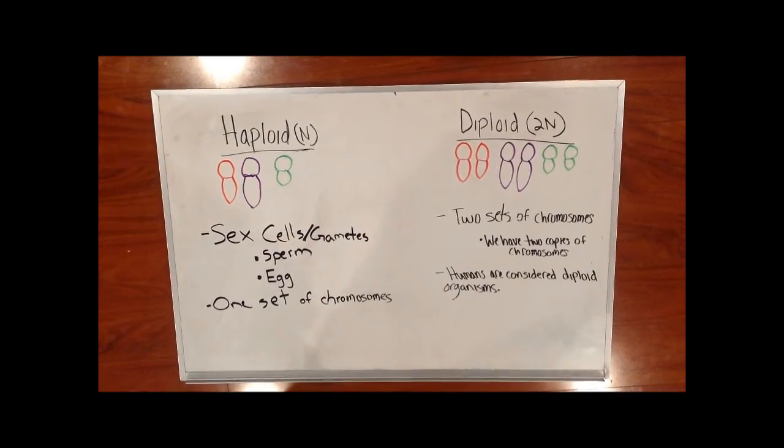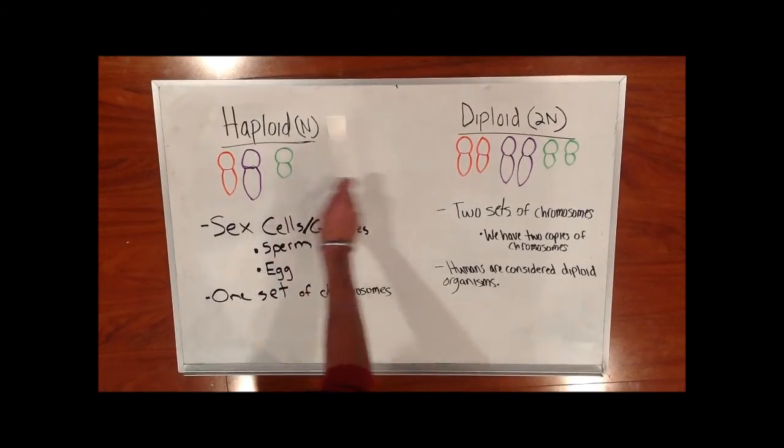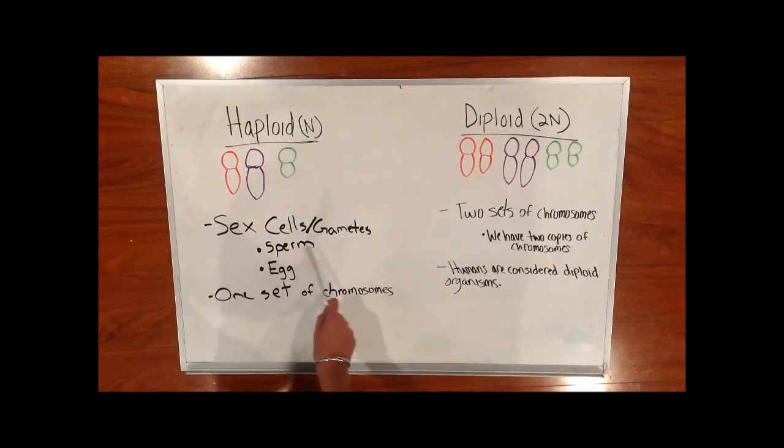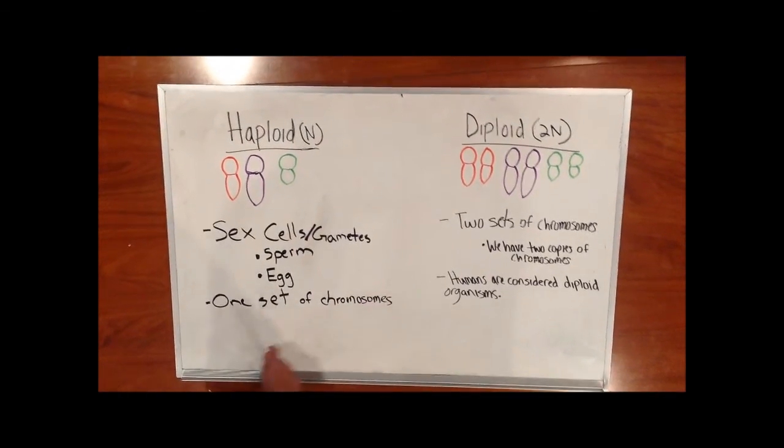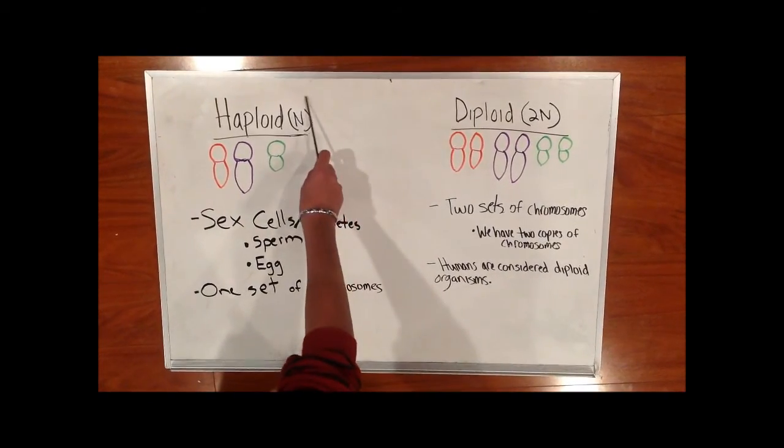Before we get started, it should be mentioned that there are two main types of cells here. There are haploid and diploid cells. Haploid cells in a human are the sex cells or the gametes. There is the sperm cell and the egg cell. Haploid cells only have one set of chromosomes, commonly annotated by the letter N.